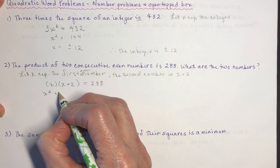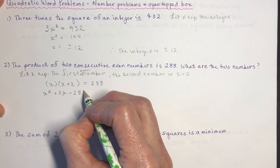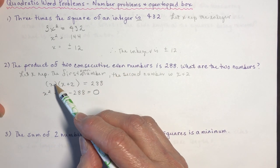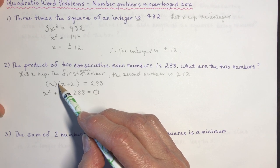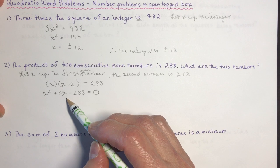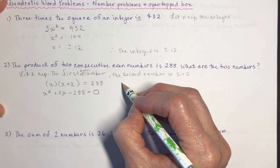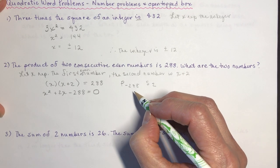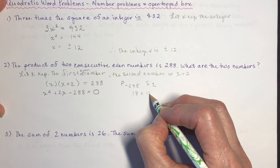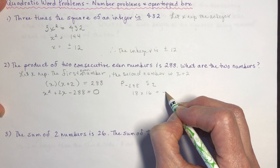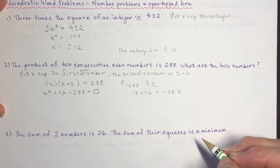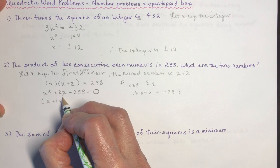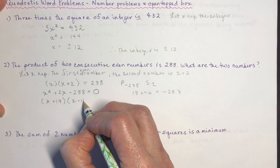Expanding and simplifying: x squared plus 2x minus 288 equals zero. Because they're consecutive even numbers — like 2, 4, 6, 8 — we're not talking about integers, so this should be factorable. I'm looking for a product of negative 288 and a sum of positive 2. It turns out 18 and 16 work, with negative 16. Factoring gives (x + 18)(x − 16) = 0.